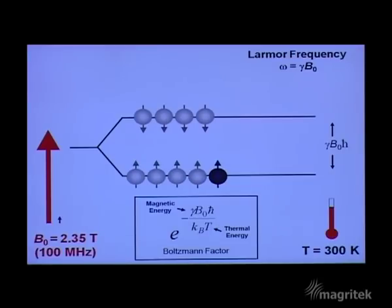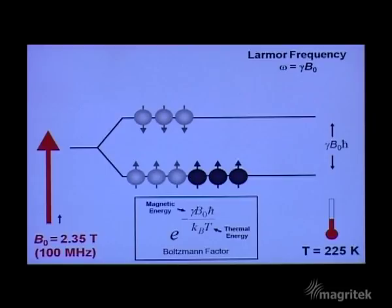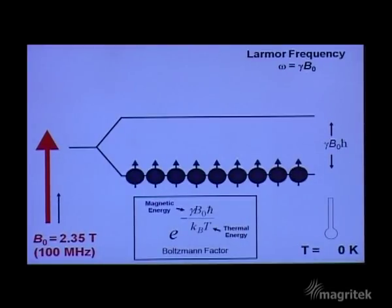We can increase the spin excess by lowering the thermal energy. In other words, by reducing the temperature. At absolute zero, all the spins will be in the low energy state and the spin excess will be at its maximum. But that's not too practical for many samples. Humans undergoing an MRI scan for example. But we do see that the magnetization vector grows as the spin excess in the low energy state grows.